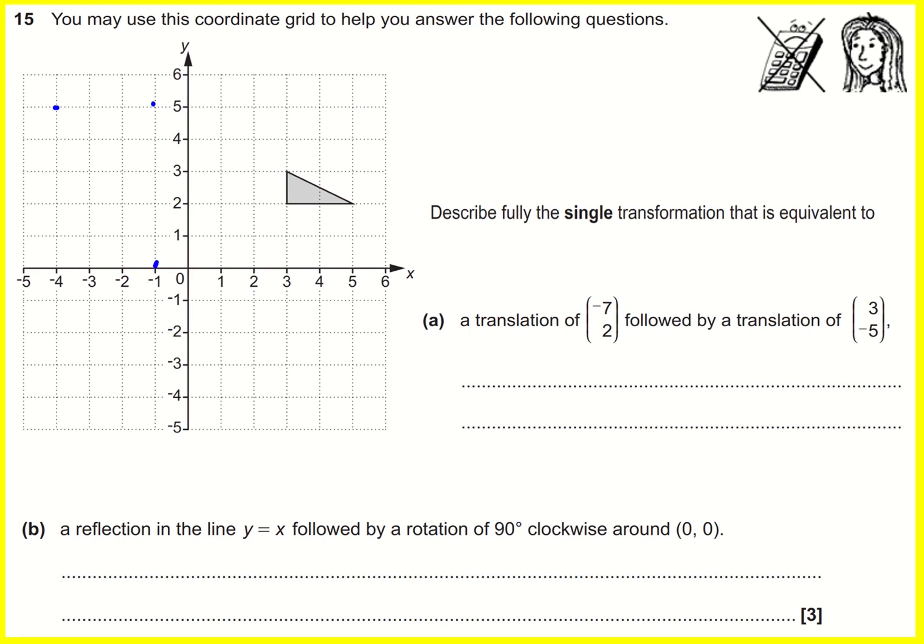I could then do the same with the other ones, and I'd end up with a triangle that's roughly here. And I can figure out then what would actually be the result, the ultimate transformation, and it would again be a translation.